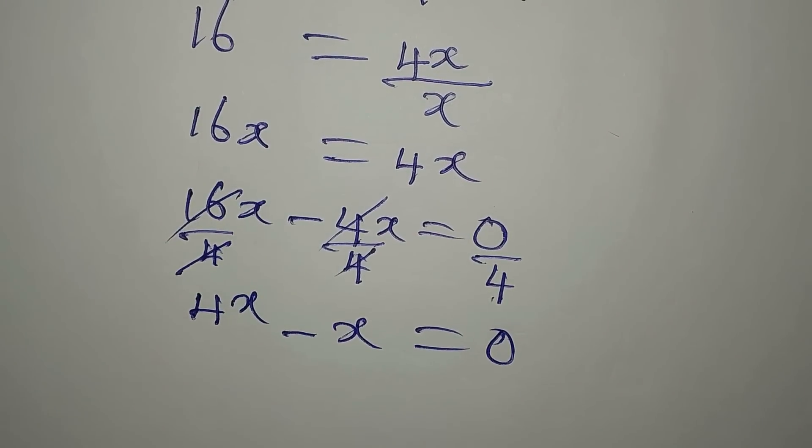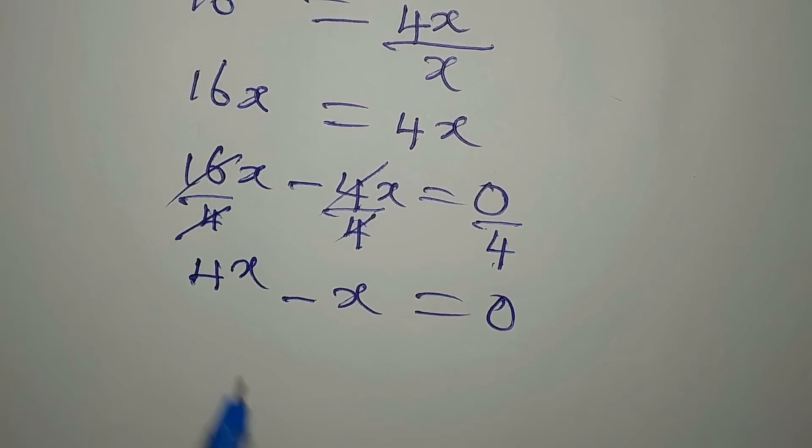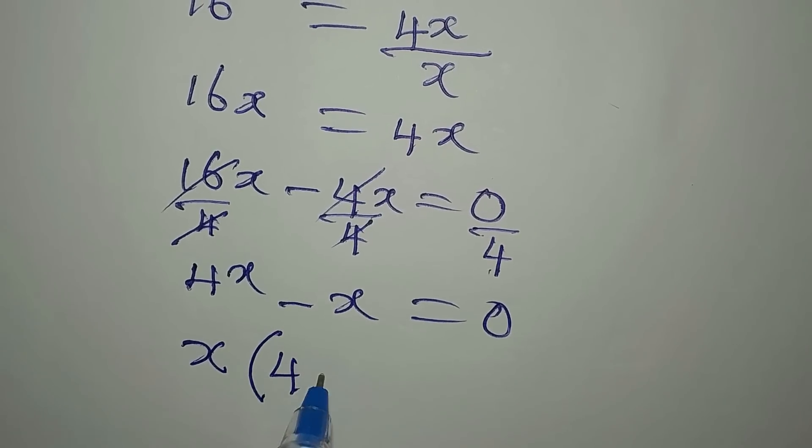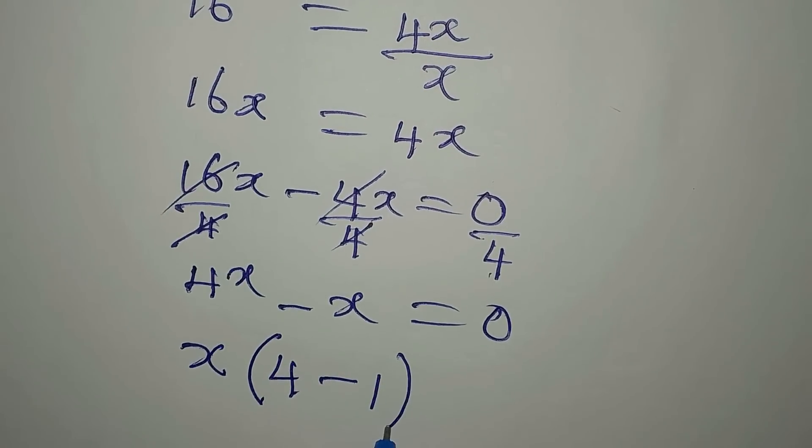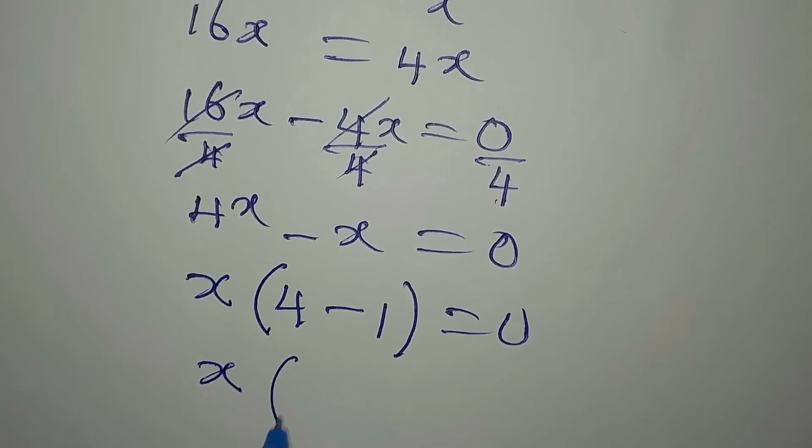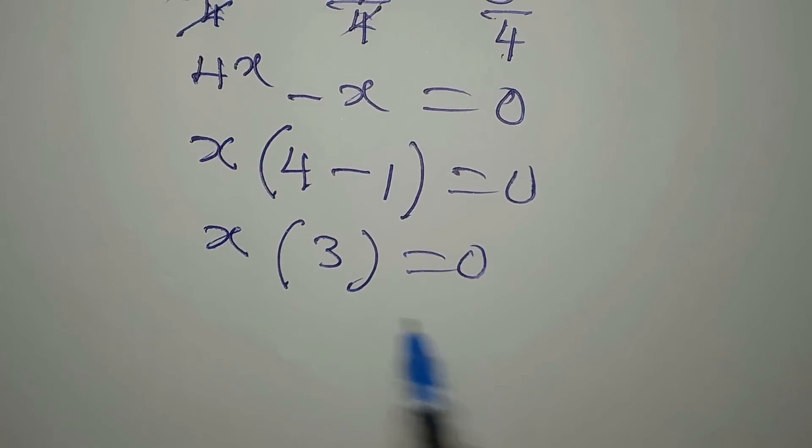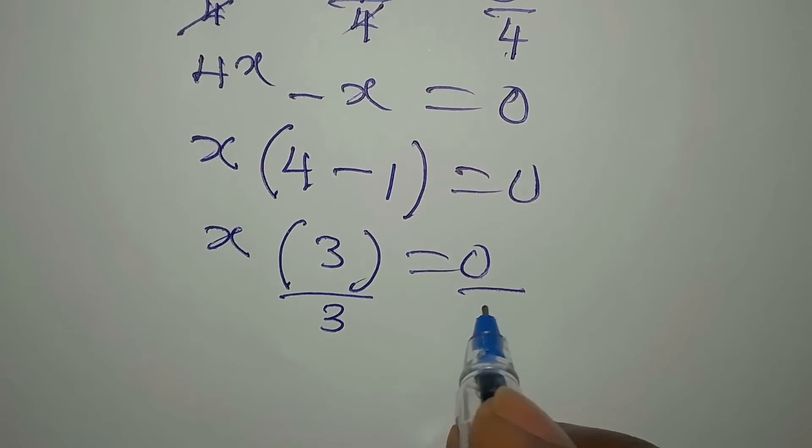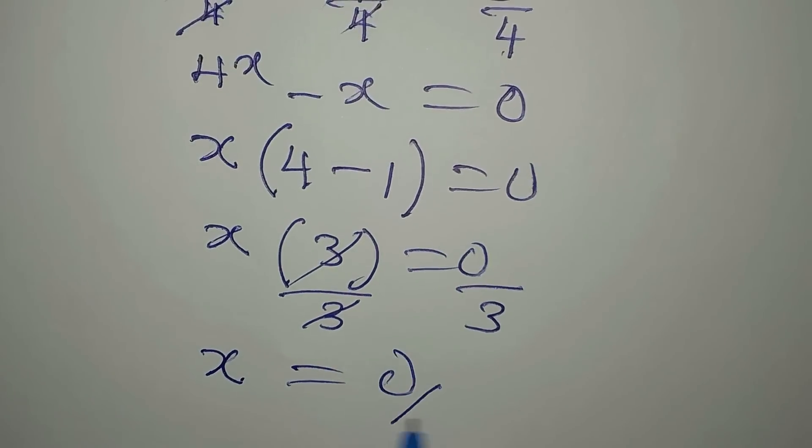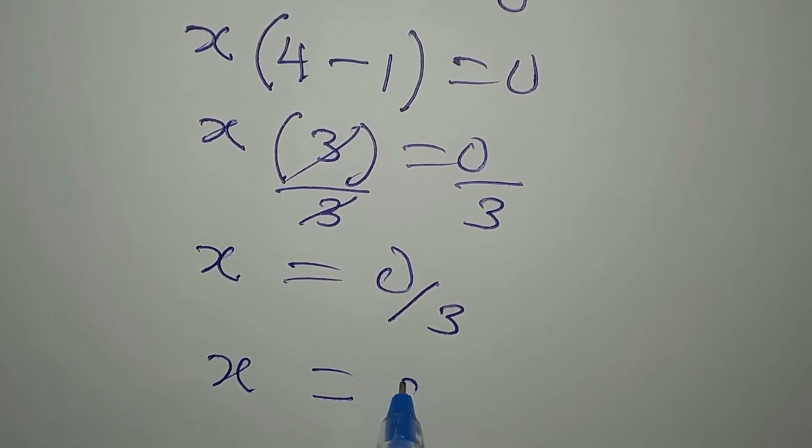Then we factorize. The first method I used, I factorized. No, I simplified this. So let me factorize. x is common, so x comes out. Here we have 4 minus, here we have 1. This is equal to 0. Now, x into bracket 3 is equal to 0. To get x, we divide by 3. So our x is now 0 divided by 3. And then the x is equal to 0.